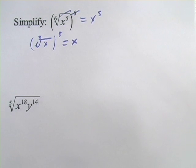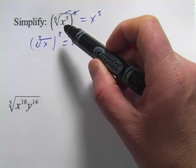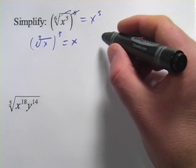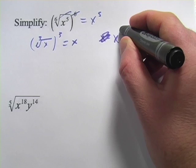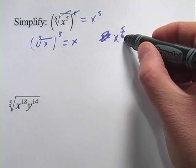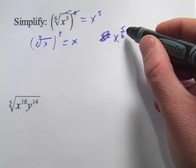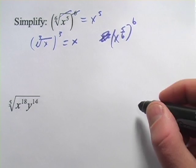There is another way to look at this, though. You could write this part inside the parentheses as a fractional exponent. So that would be x to the five-sixths power. Remember, the root is the denominator and the power is the numerator. That quantity raised to the sixth power.